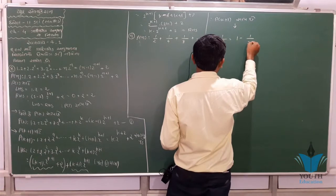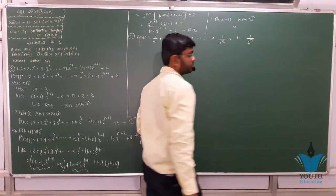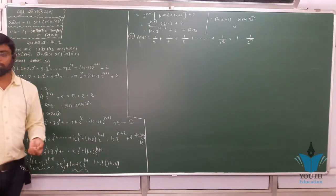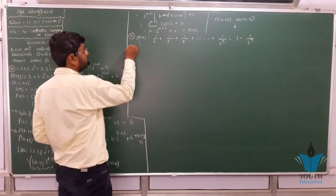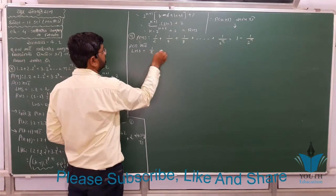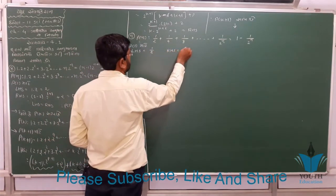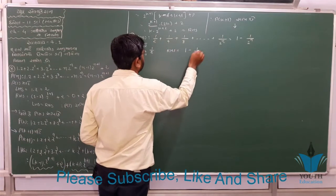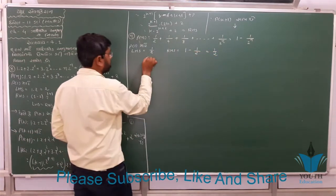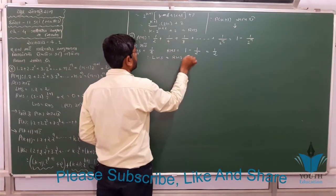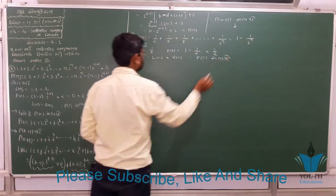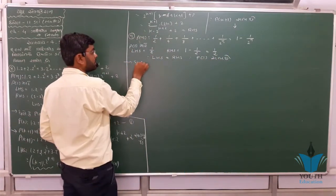Now the second problem. P(n): 1/2 + 1/4 + 1/8 + ... + 1/2ⁿ = 1 - 1/2ⁿ. For P(1): LHS = 1/2; RHS = 1 - 1/2 = 1/2. So LHS equals RHS. P(1) is satisfied. Now assume P(k) is true. LHS equals RHS is done. Thus P(k) satisfies the statement.